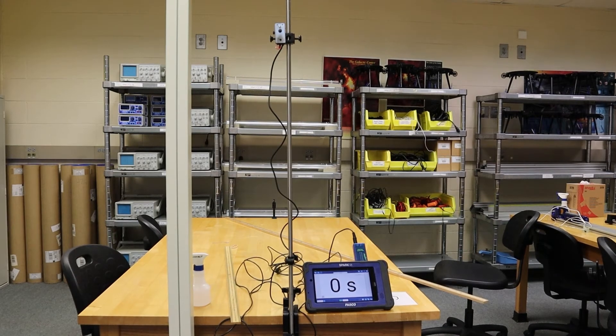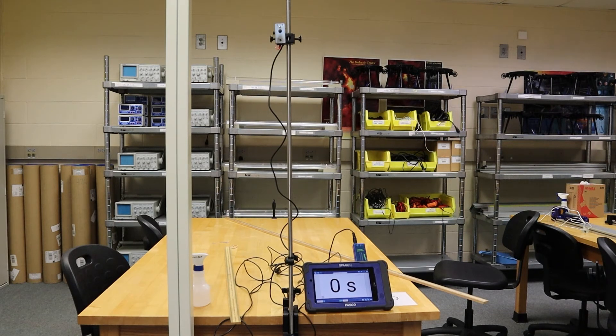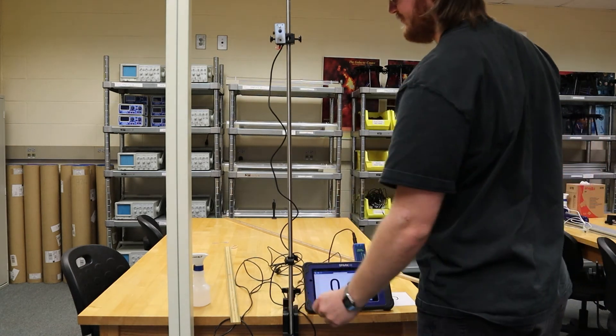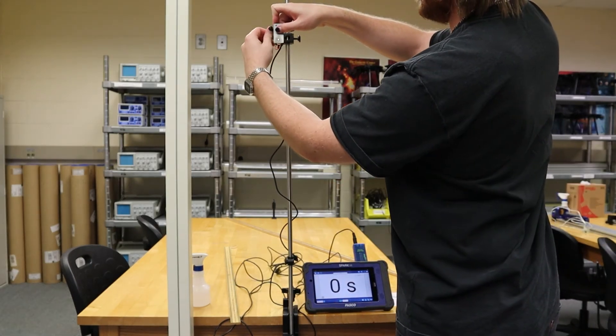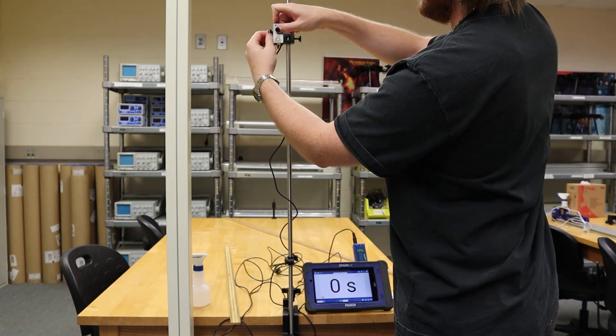Procedure A consists of dropping the ball from the 1.5-meter height multiple times. Please refer to the LXI video for setup questions. We will be using 4 digits of accuracy for this lab.